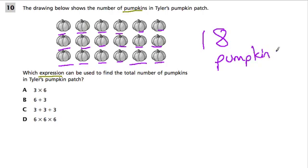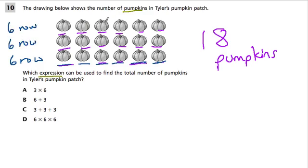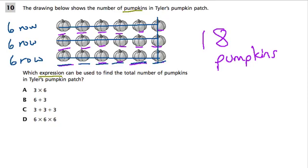A nice fast way of thinking about that might have been to say to myself: there are 1, 2, 3, 4, 5, 6 in one row. And there are 6 in this row, and there are 6 in this row. So there are 3 rows of 6. There are 3 rows, 3 pumpkins this way, and each row has 6 pumpkins. So you can really think about this as 3 groups of 6 pumpkins — 3 rows or groups of pumpkins.